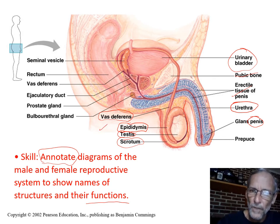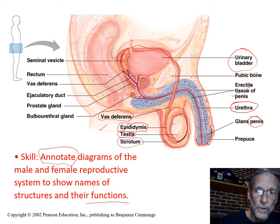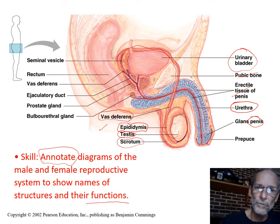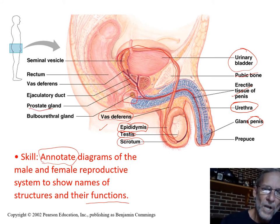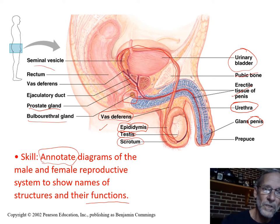The vas deferens is the tube that sperm cells formed in the testes come up through, around the bladder but not through the bladder. It then joins a duct — basically like a street that changes its name — because it's the same tube that becomes called the urethra. Along the way you have a couple of other glands: the prostate, the bulbourethral, and the seminal vesicle is another one.